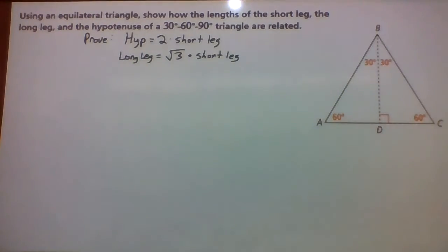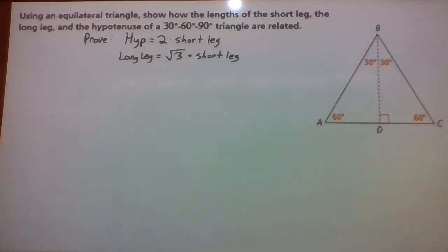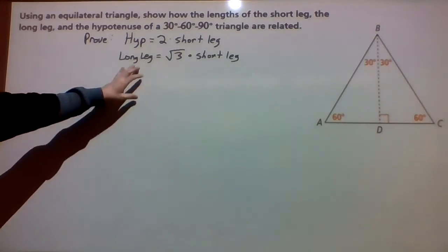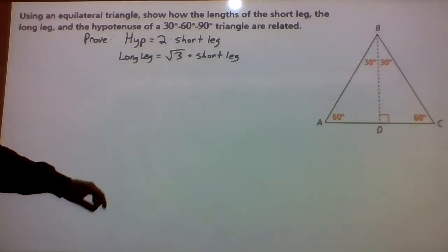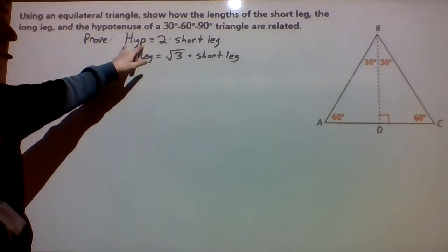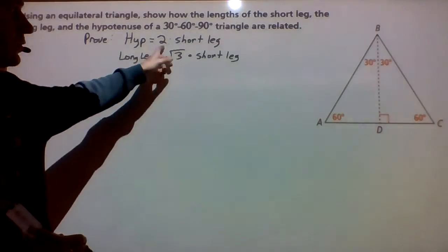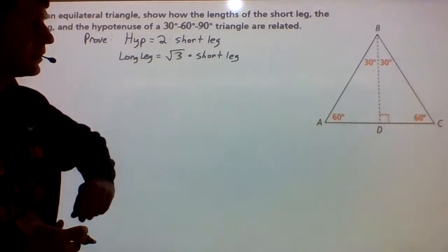Example four says: using an equilateral triangle, show how the lengths of the short leg, the long leg, and the hypotenuse of a 30-60-90 triangle are related. So essentially what we want to do is prove our two equations here. The hypotenuse of the 30-60-90 triangle is going to be equal to two times the short leg.